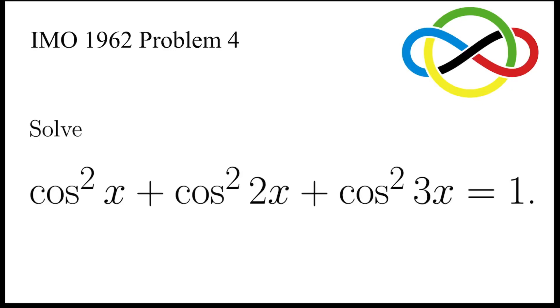Let's take a look at problem 4 from IMO 1962: solve the equation cos²x + cos²2x + cos²3x = 1.